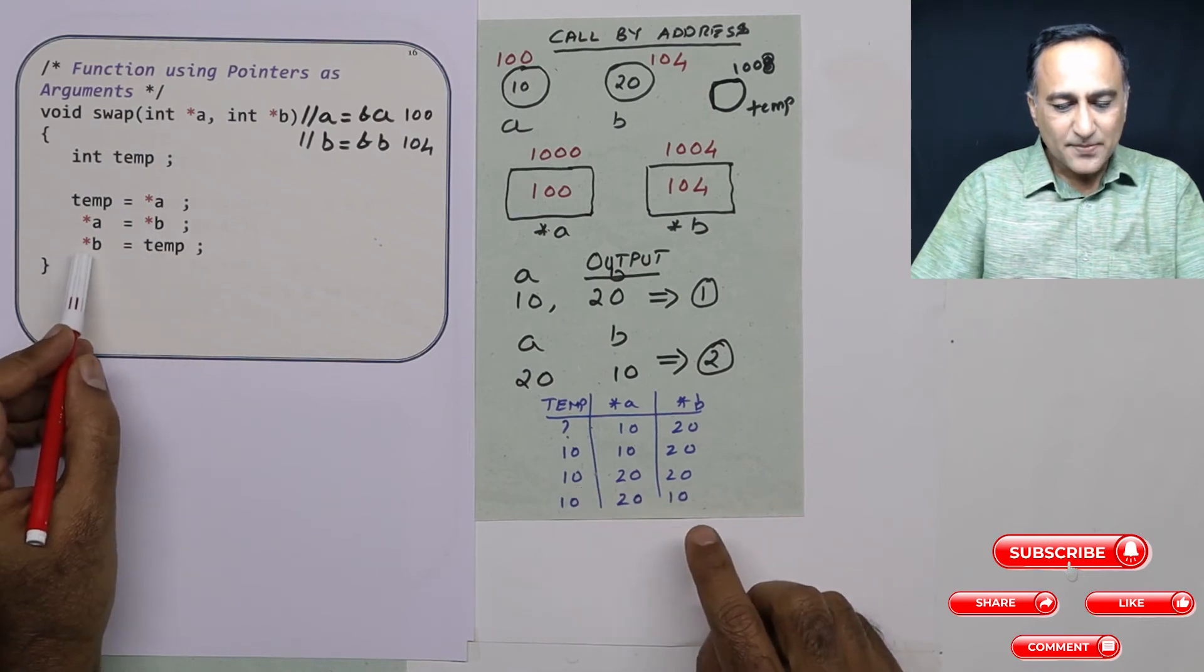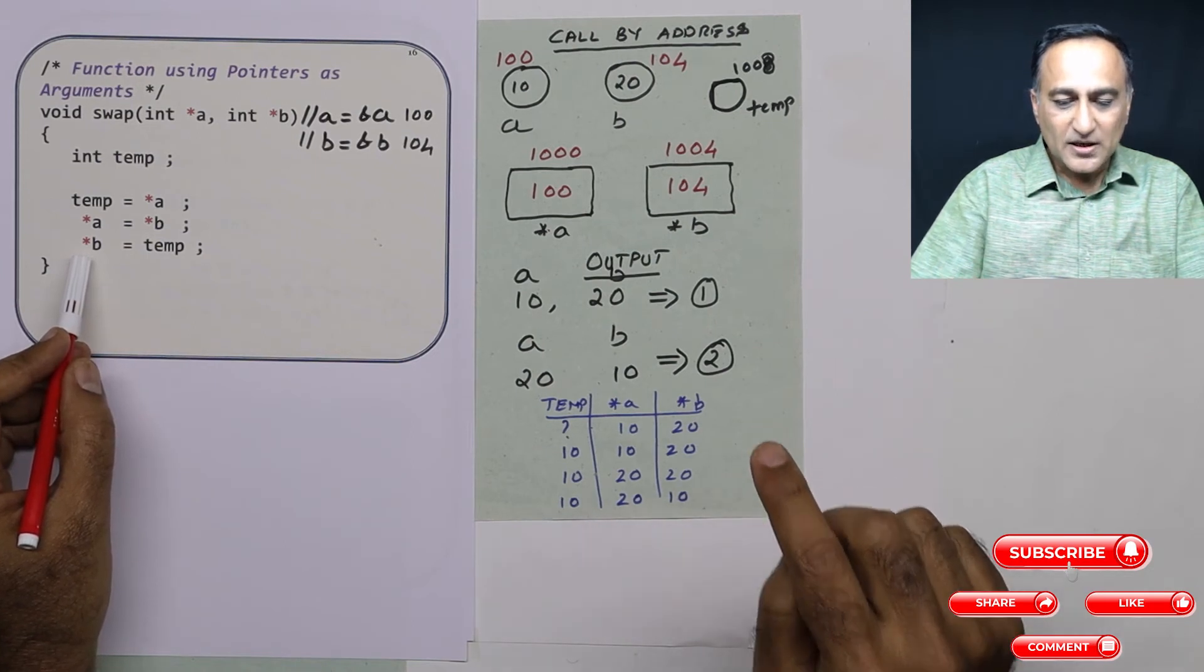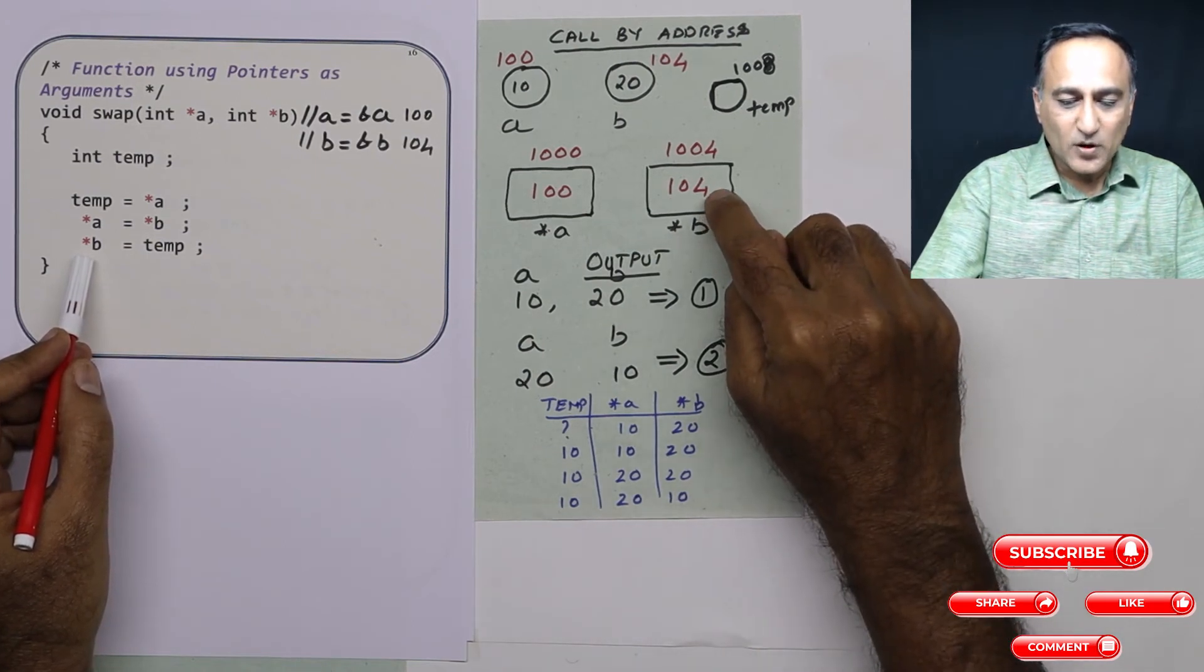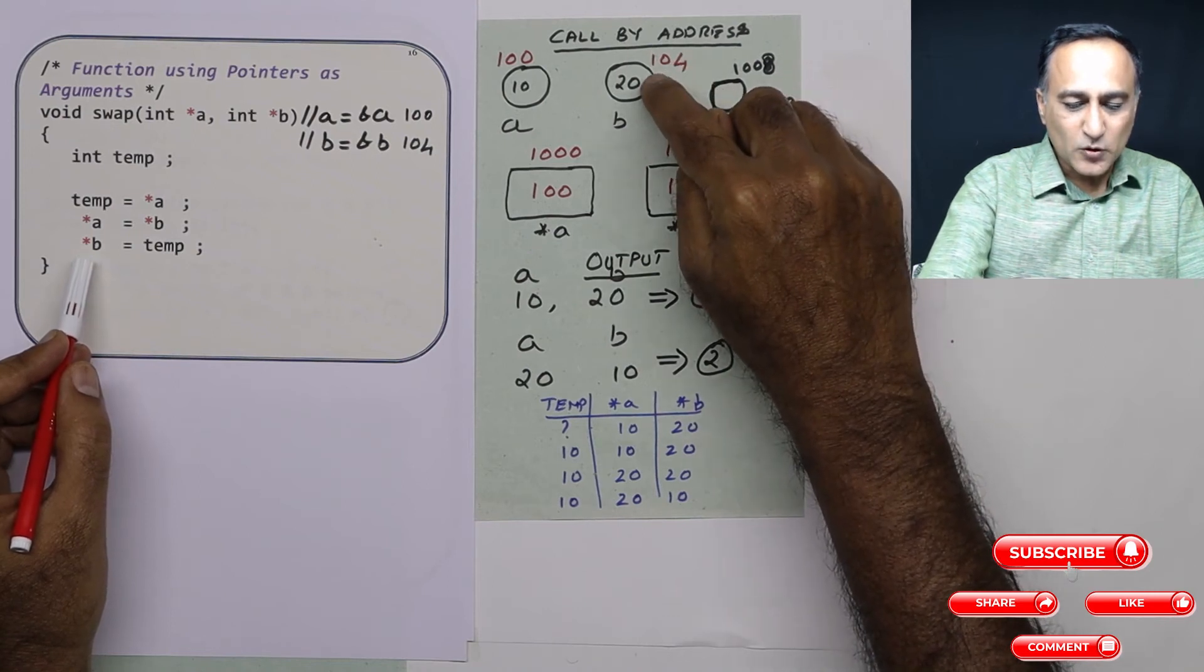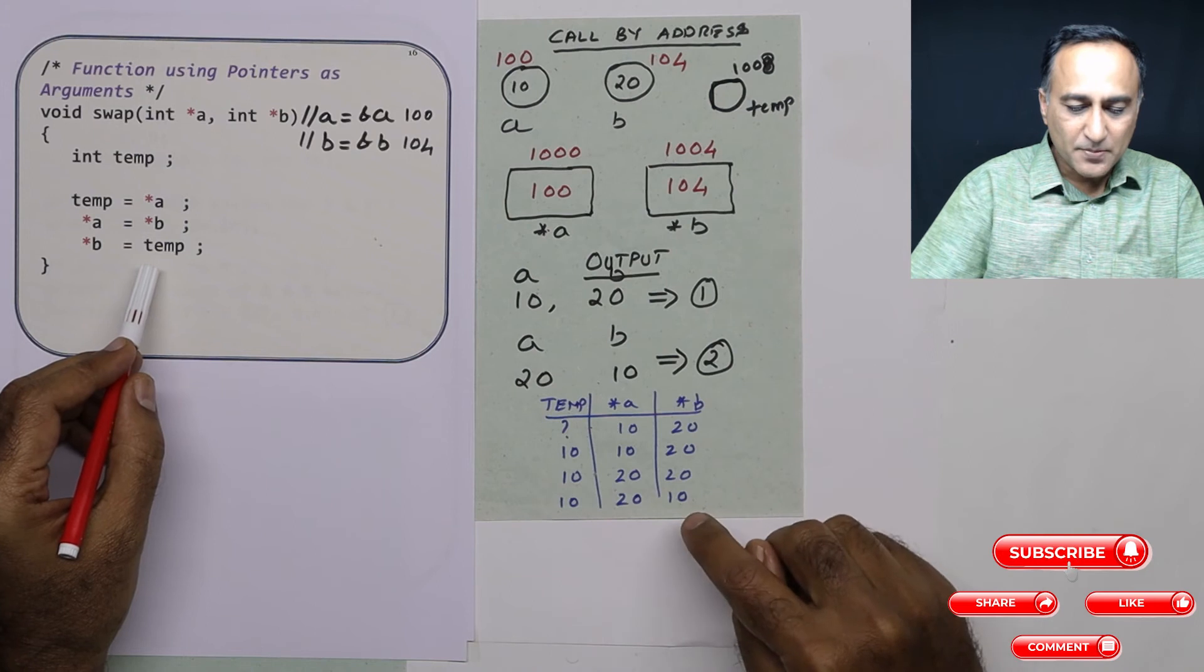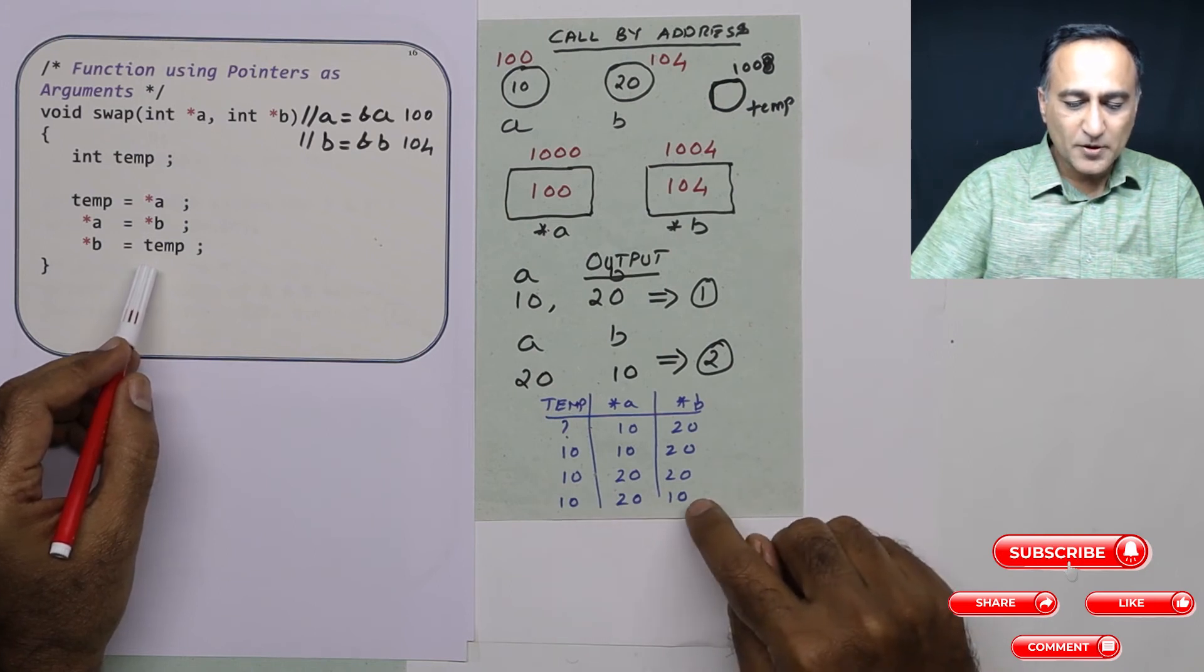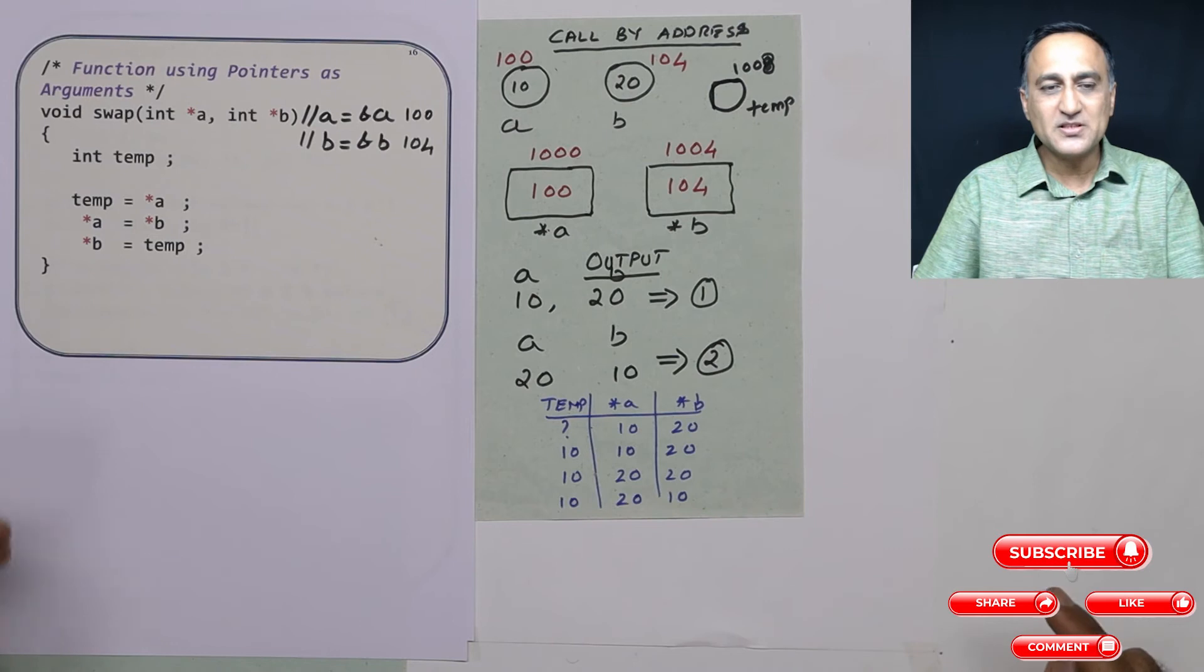Now in the last step, the location referred by b, b is referring to 104. This 104th location, 20 is going to get replaced by value in temp, which happens to be 10. So this 10 gets copied over here and b also becomes 10.